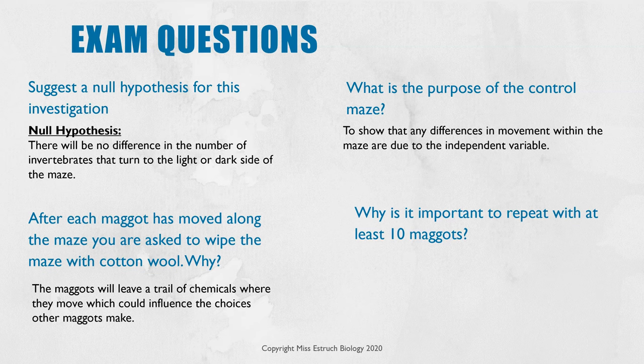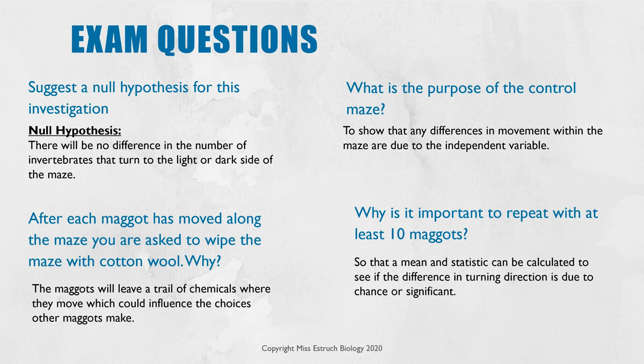Finally: why is it important to repeat with at least 10 maggots? This is so that you have enough data to calculate a mean and, more importantly, a statistic. You need to be able to calculate a statistic so you can say whether the difference you saw is significant or whether it was just due to chance.